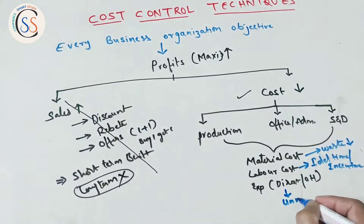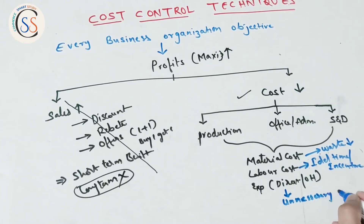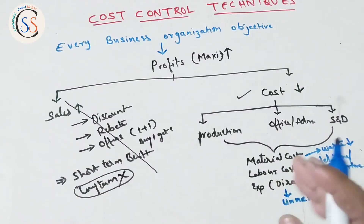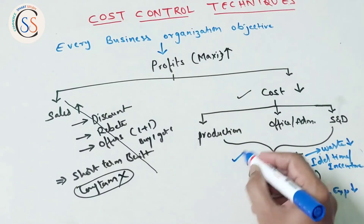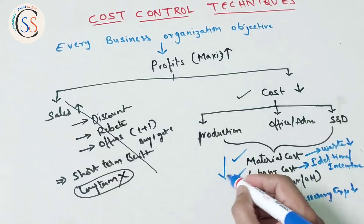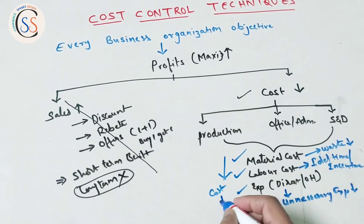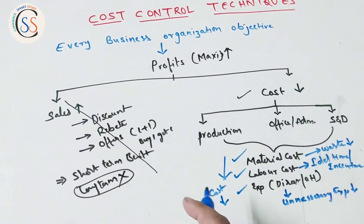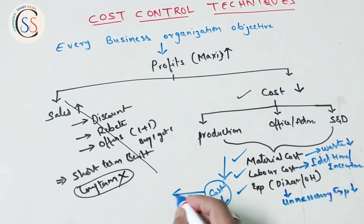Next are expenses — overheads and indirect costs. There are necessary expenses and unnecessary expenses. When unnecessary expenses increase, total cost increases. So, among the three main cost factors — material cost, labor cost, and expenses — material waste should be reduced, labor efficiency improved, and unnecessary direct expenses eliminated to manage total cost.